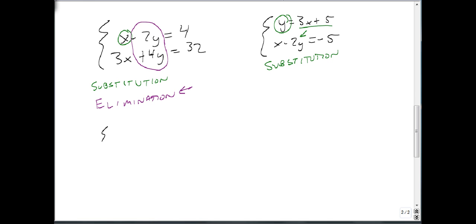As a last example, 2x plus 5y equals 7, 3x minus 4y equals minus 1. Notice that there's no ones. There's no easy multiples. I would only use elimination on this one.